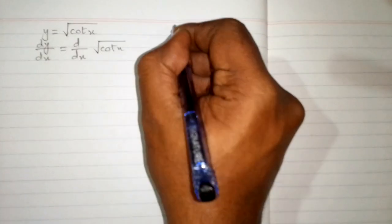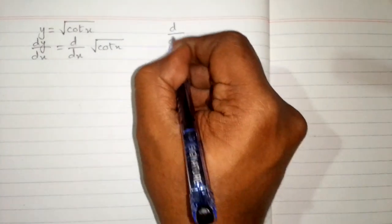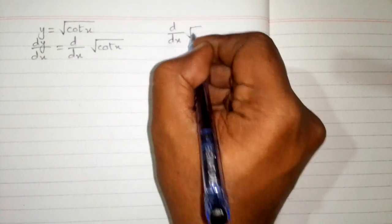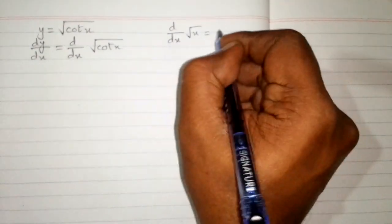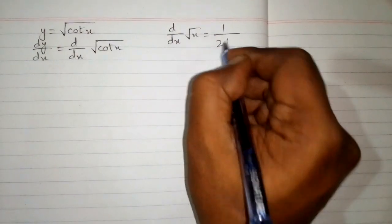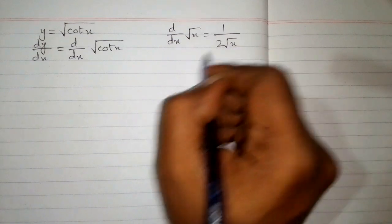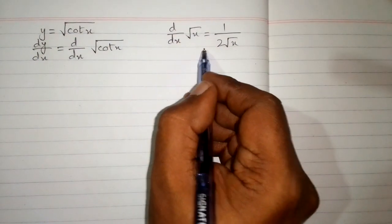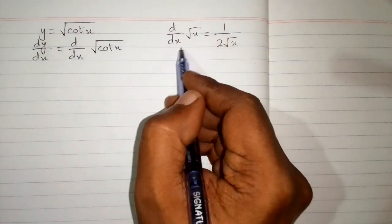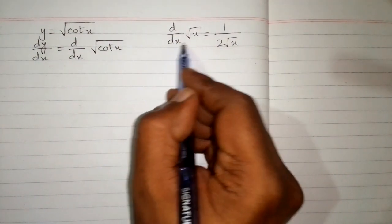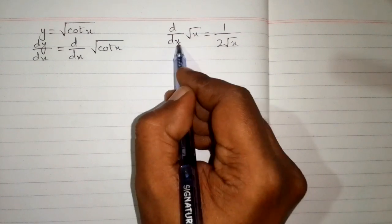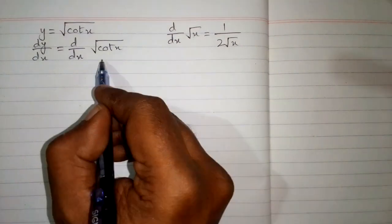Now we will apply the formula that the derivative of square root of x is equal to 1 upon 2 square root of x. So we can apply this formula, but in order to apply this formula, this variable and this variable must be the same.